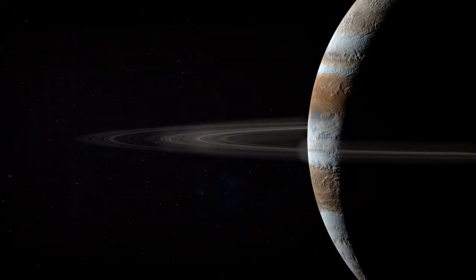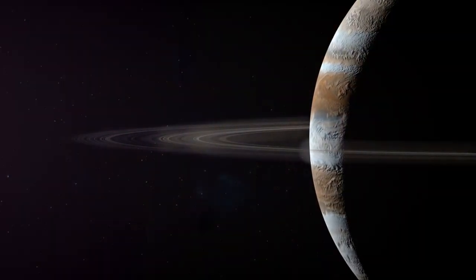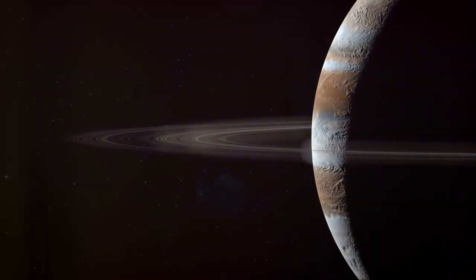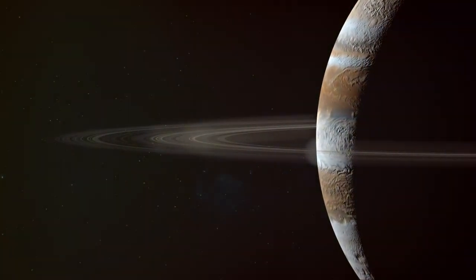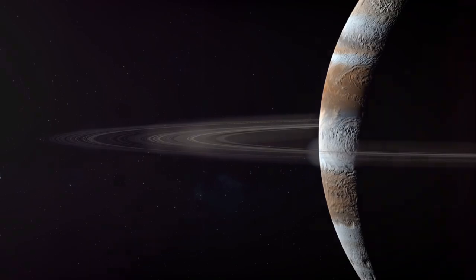Fast forward to the late 18th century, astronomer William Herschel confirmed the existence of a ring around Uranus, though it was not until the 20th century that we had the technology to truly understand these phenomena.